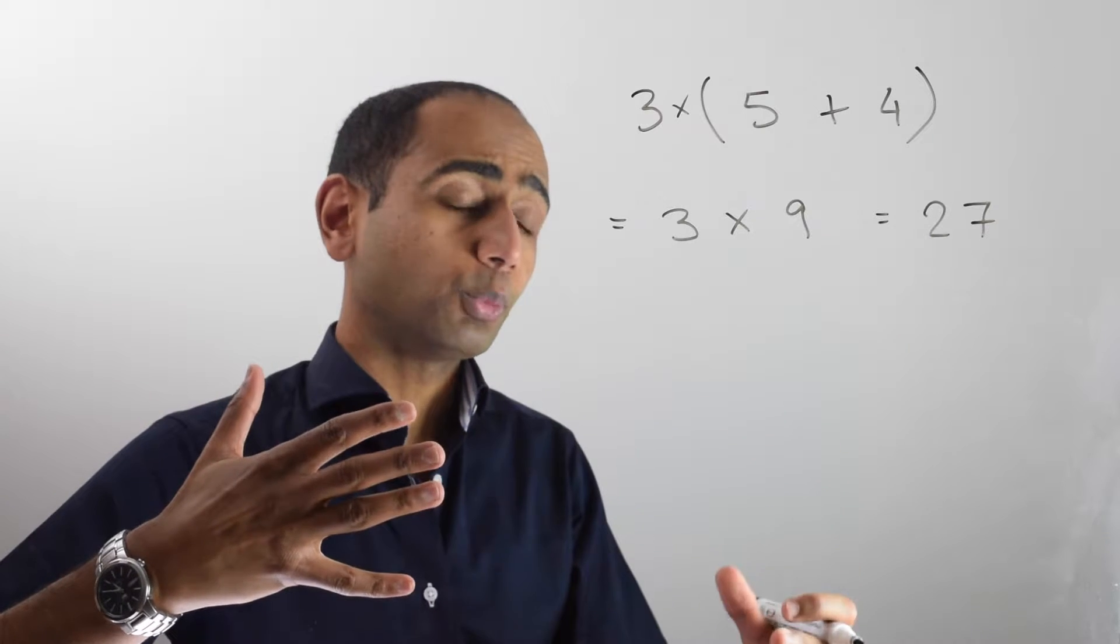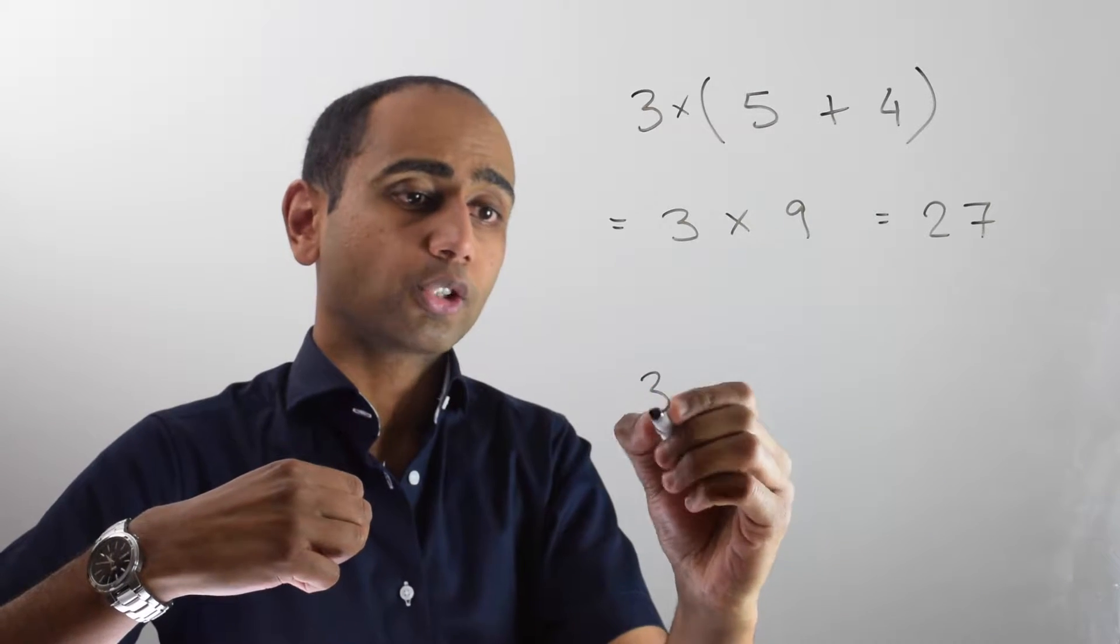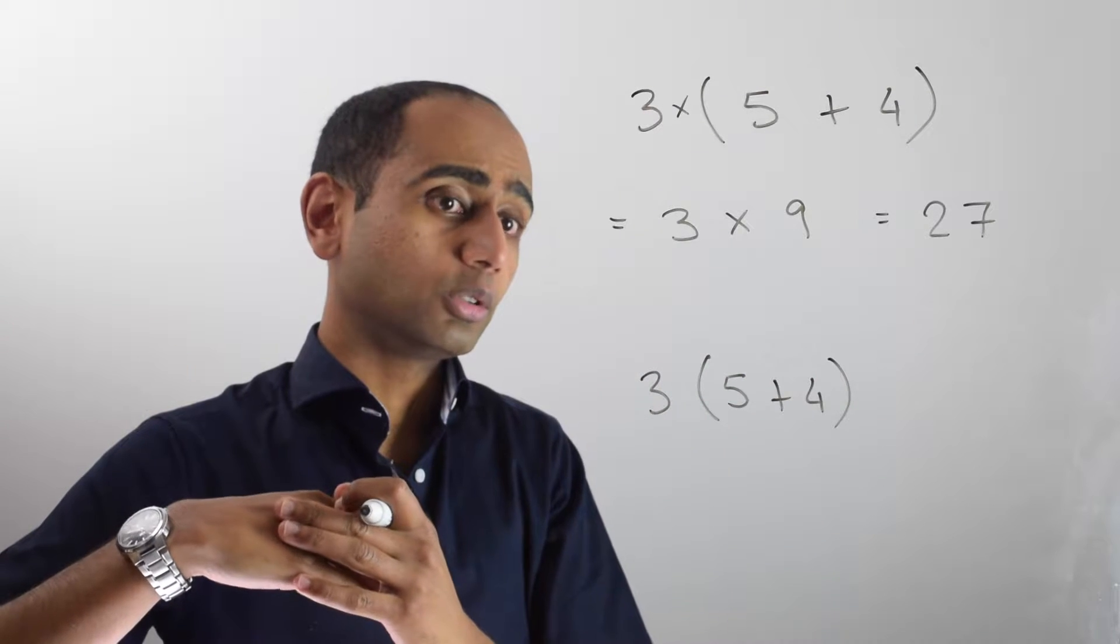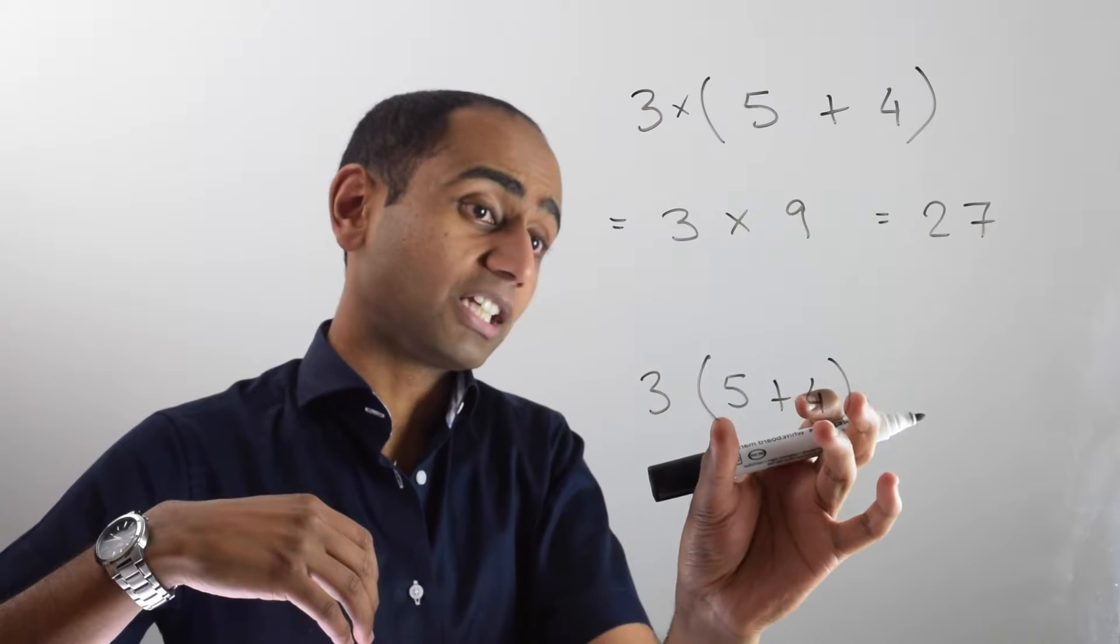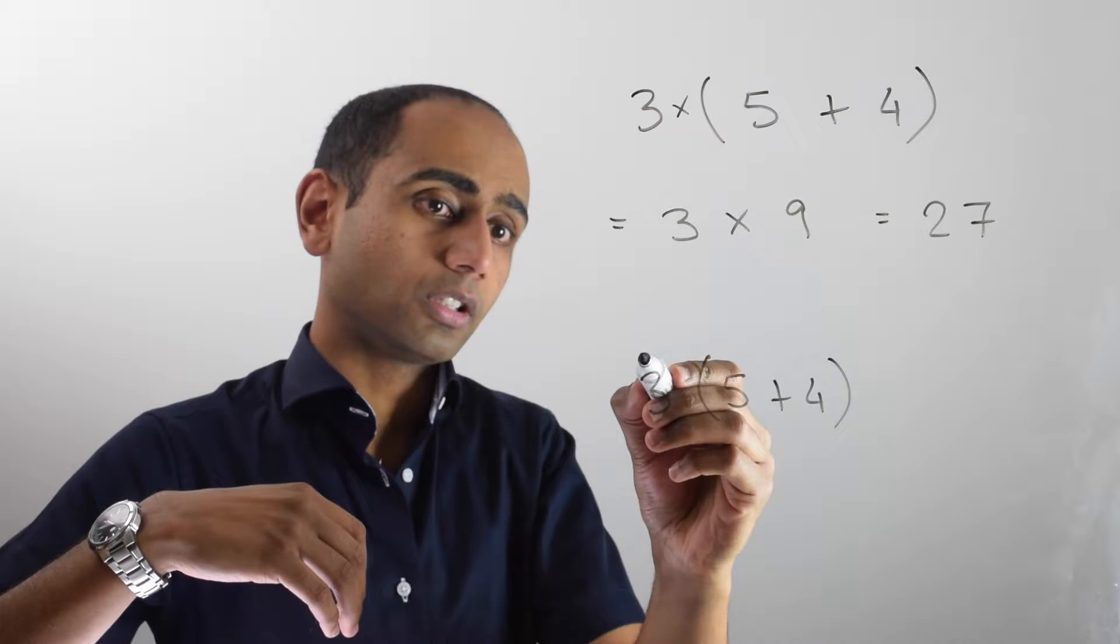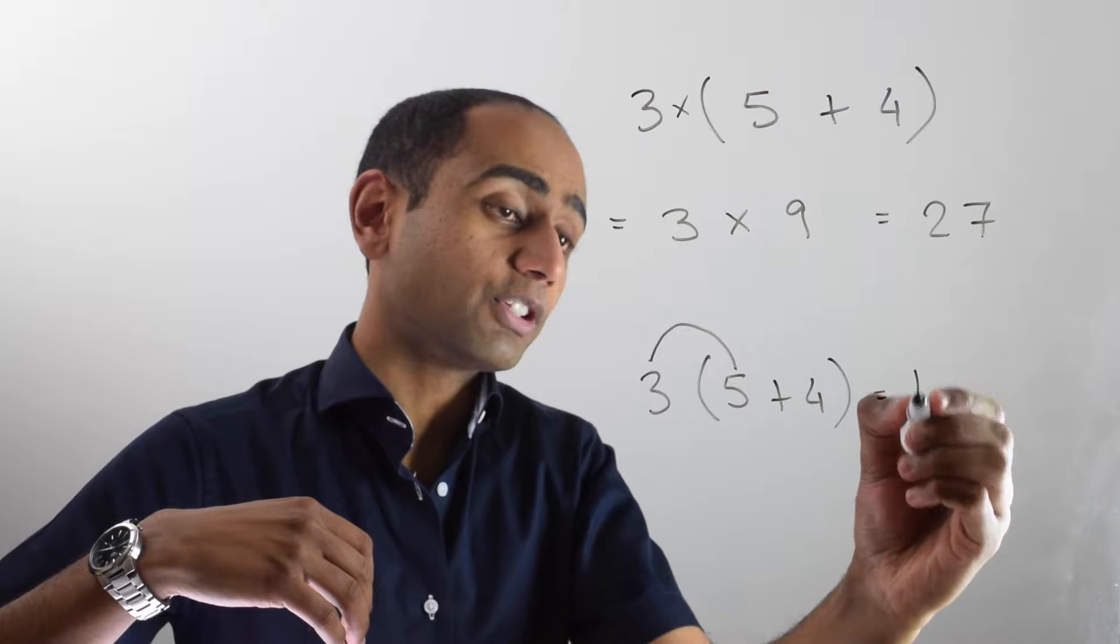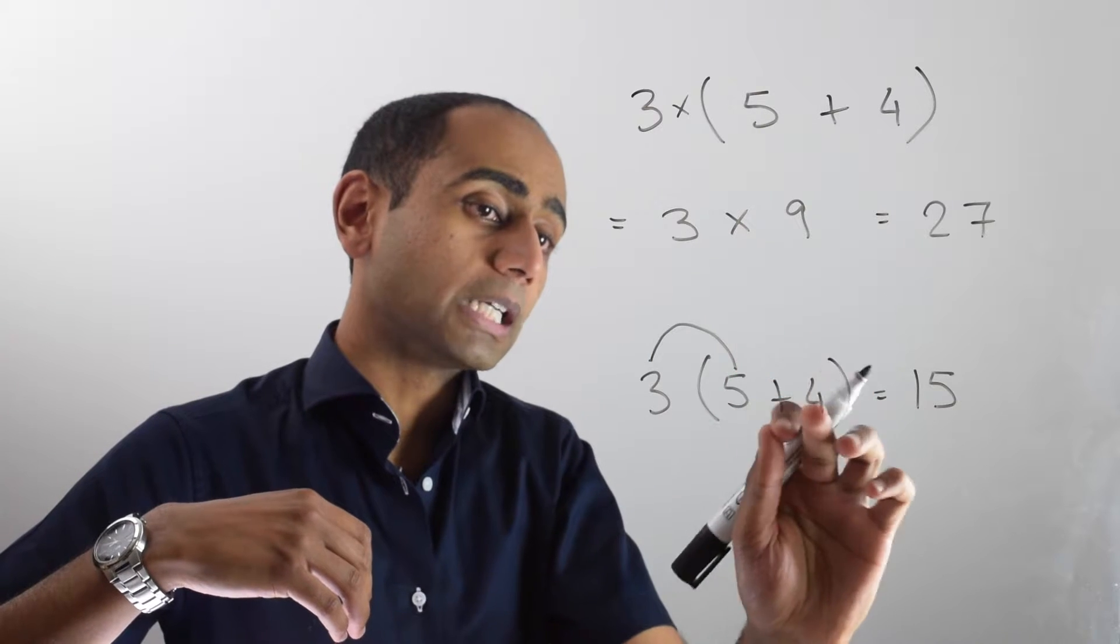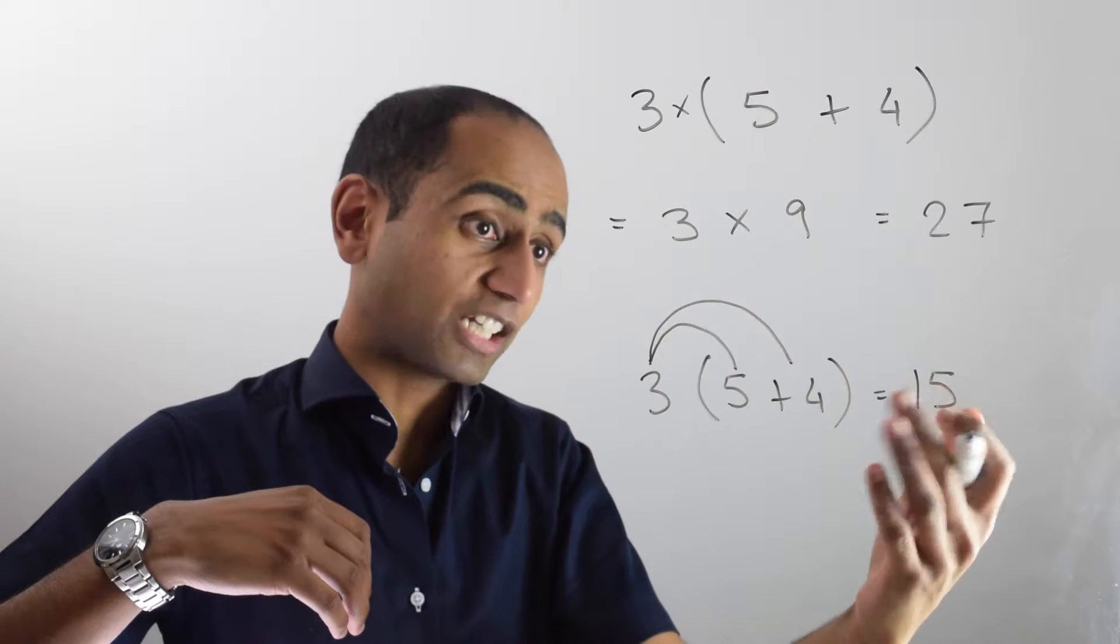I'm going to show you a different way of getting the same answer. If I've got 3 times (5 + 4), what I can do is multiply what's outside the bracket by everything inside the bracket. So if I do this, 3 times 5 would give me 15. And then I need to multiply 3 by positive 4, and that's going to give me an extra 12 to add on.